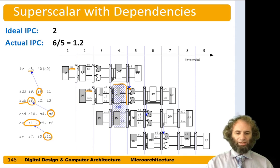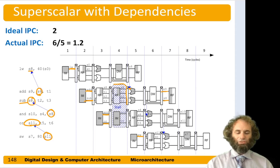The subtract is independent of the add, so we could also issue it, and both finish in step seven. On cycle three we could issue the AND and the OR, but they stall as well because the add and subtract have been stalled. Finally on cycle five we could issue the store. So it takes five cycles to issue six instructions, giving an actual IPC of six-fifths, or 1.2 — better than one, but not great.